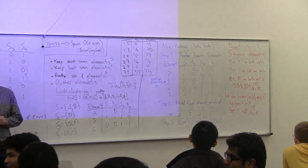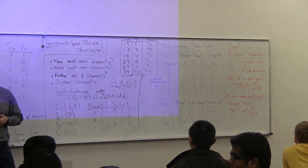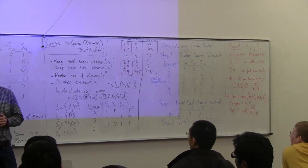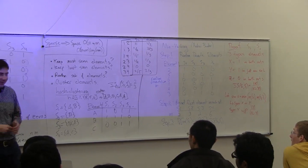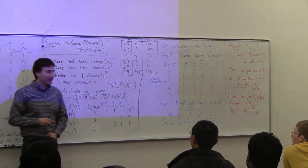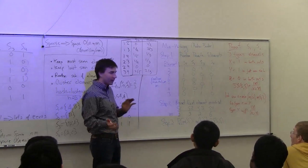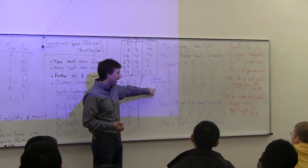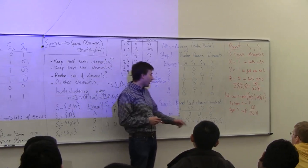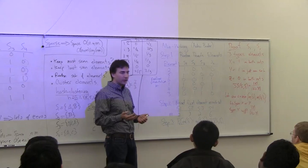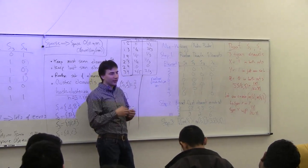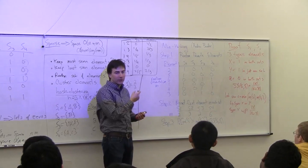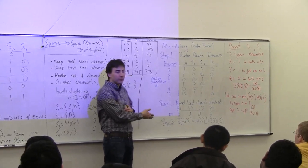If we use the indicator that m(Si) equals m(Sj) as our estimator and repeat it many times, we'll get a good estimate of the Jaccard similarity. So what we're going to do is repeat this with k different permutations — M1, M2, ..., Mk. For any pair of sets S1 and S2, we have k random variables X1 through Xk, where Xi equals 1 if Mi(S1) equals Mi(S2) and 0 otherwise. Our estimator is the average of these Xi's, which gives a good estimate of the Jaccard similarity.